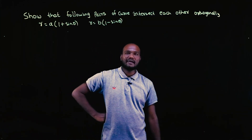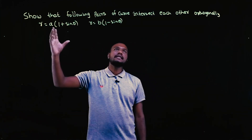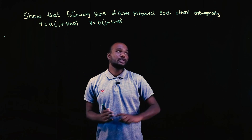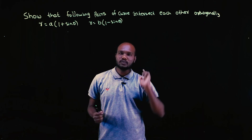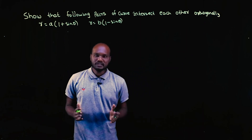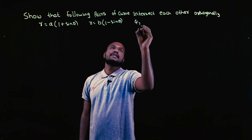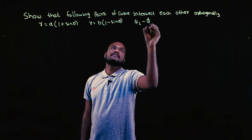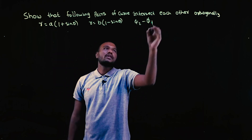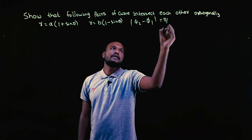What is the question given? We have to find the angle between these two curves and show that it is orthogonal. So we have to find φ₂ minus φ₁, and the modulus of that should be equal to π/2.